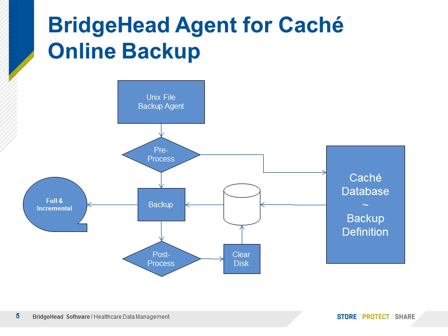The Bridgehead Agent for cache online backup is a relatively straightforward process. We're going to use our backup agent, and that's going to begin the process by issuing a pre-process, which is a QIES — the cache freeze command. It's also going to prepare any synchronization that may need to happen. At that point, the system is going to be quiesced and ready for backup. The backup is then going to be read from the disk through the backup node into the appropriate full or incremental backup device.